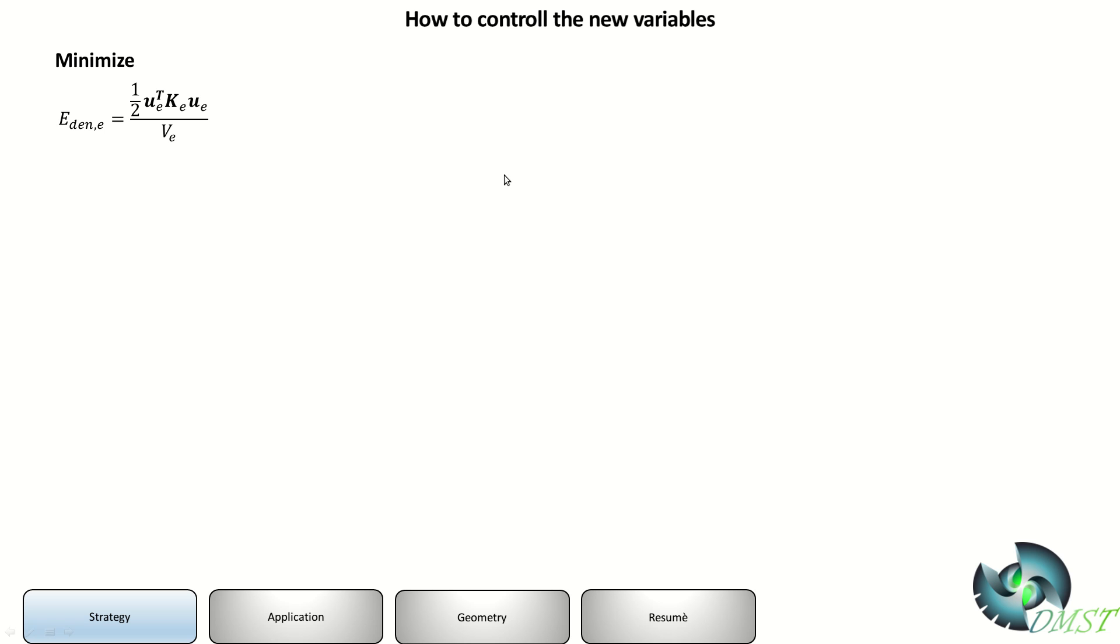We saw last time that we need the sensitivity. How can we get it? We differentiate it by the design variable, in this case the density of the element, and then we get this equation. It doesn't matter what there is in the detail, but you only need to see how it will work. We differentiated each part of the equations. We need u transfer k and u.